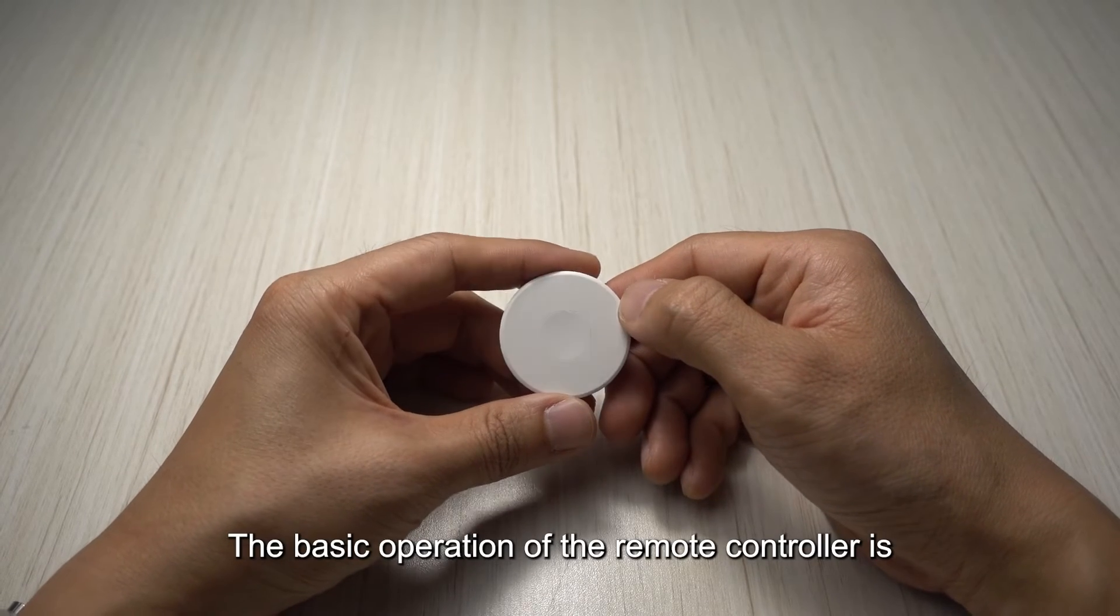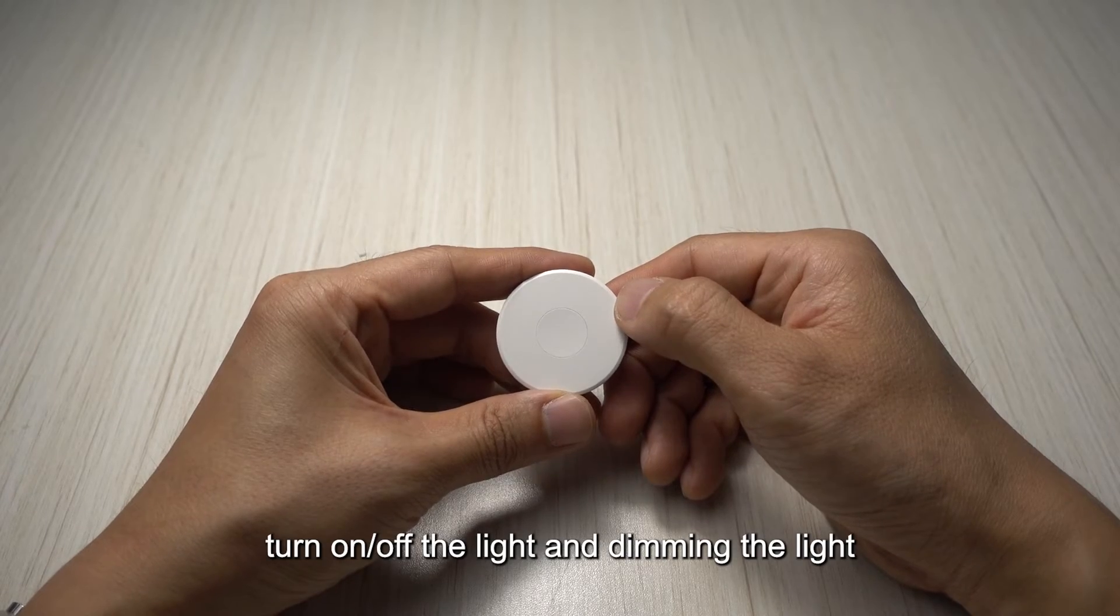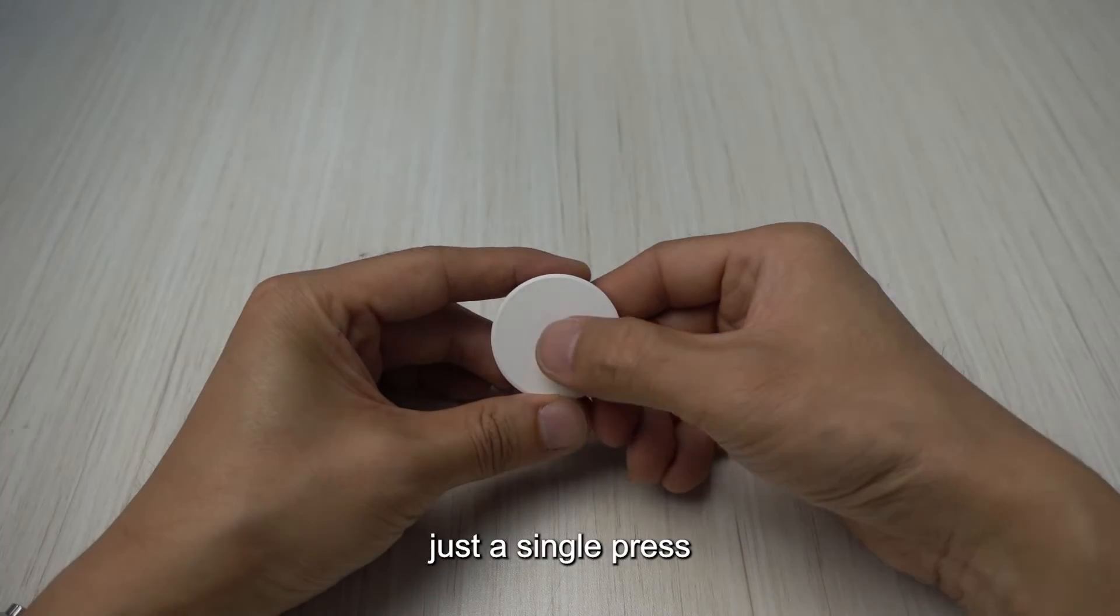So the basic operation of the remote controller is turn on off the light and dimming the light. Turn on off is quite simple, just a single press.